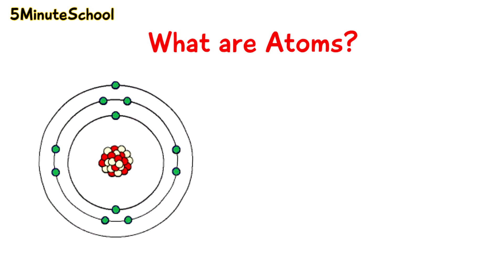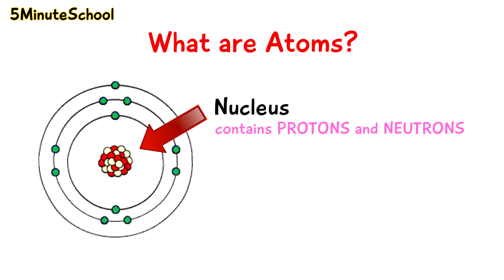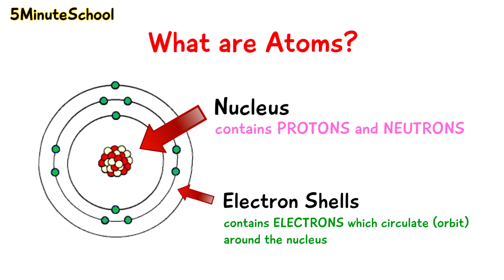Here's what an atom looks like. The center of the atom is called a nucleus and it contains protons and neutrons. Outside of the nucleus we have electron shells which are where the electrons are. The electrons circulate around the nucleus of the atom, orbiting around the center.